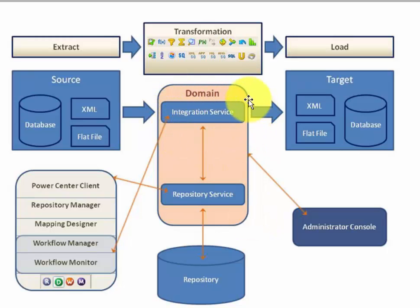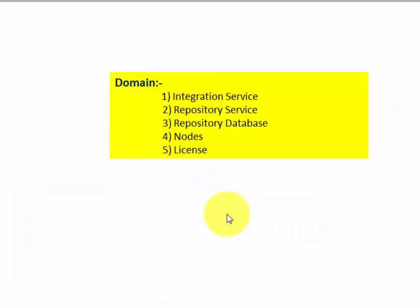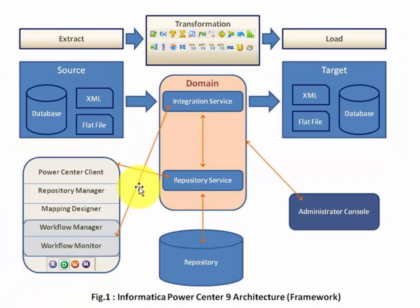Integration service actually performs the ETL operation. It reads from source, applies different transformation logic as per the mapping logic, and then loads into target. We need a physical machine to run any services, be it application service or core service — we call this physical machine a node. PowerCenter creates a domain to manage its application services like repository service, integration service, repository database, nodes, licensing, etc. So a domain contains different services and nodes. PowerCenter keeps everything under a domain.